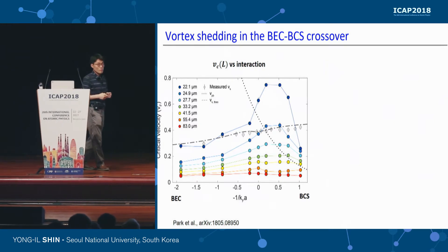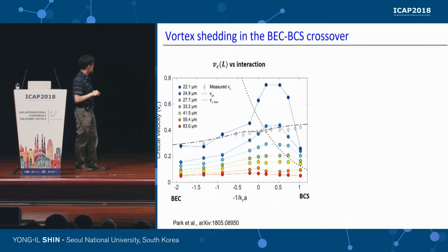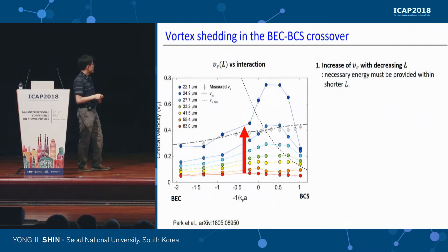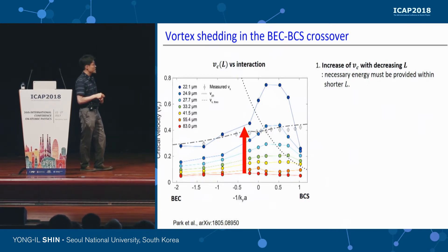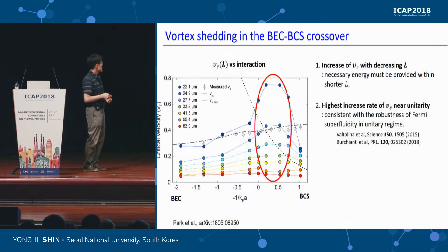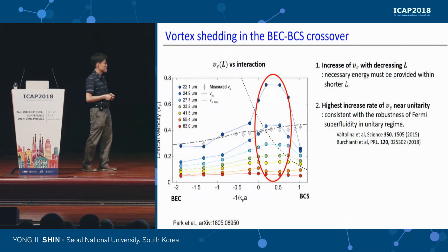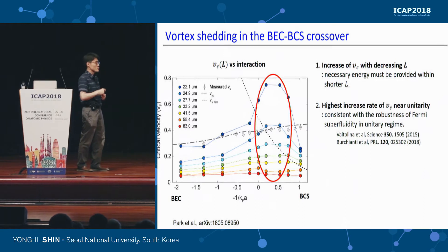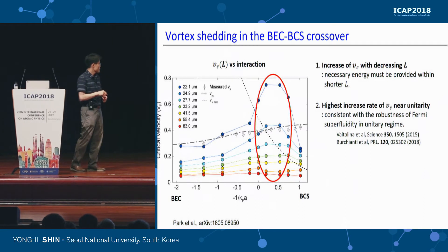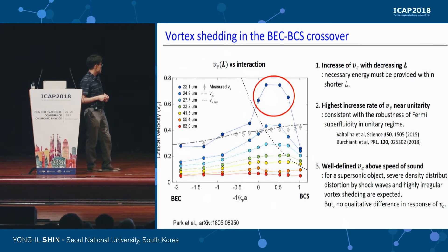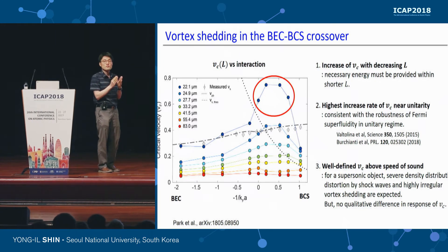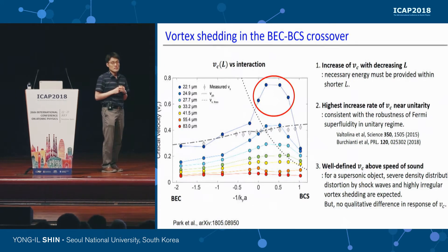We measured the critical velocity as a function of sweep distance and extracted the L → ∞ limit. This is the result across the BEC-BCS crossover — very rich with many interesting features. First, critical velocity increases with decreasing L, as expected. Second, the increasing rate of V_C is highest near unitarity, which is consistent with the recent demonstration of the robustness of Fermi superfluid near unitarity in Josephson junction experiments. Surprisingly, at very short sweep distances, the critical velocity for vortex shedding is even above the speed of sound — a supersonic superfluid dynamics regime, also very interesting.